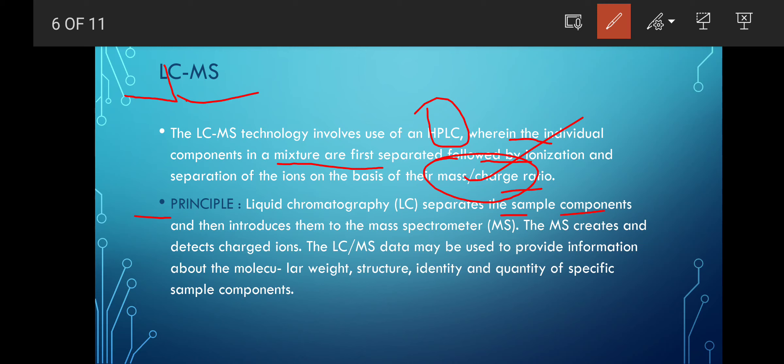It separates components in a mixture and introduces them into the mass spectrometer. The LC is connected to MS. The mass spectrometer detects the charged ions and LC-MS has particular data used to provide information about molecular weight, the structure, identity and quantity of specific sample components. Based on all these categories we can define what type of component was present.